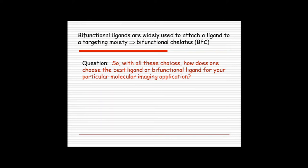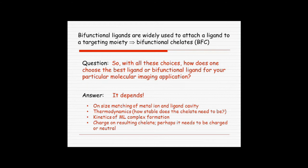So with all these available, how does one choose which one's the best one? If you have them all available to you, many of them are available commercially. So how do you choose the right ligand? And the answer is, well, it depends, of course. That's always the answer, right? And it depends upon things such as the size matching of the metal ion and the ligand cavity. In other words, I'll show you that that's an important consideration. Depends upon thermodynamics. How stable does the chelate really need to be for your particular application? How long is it going to remain in the animal or in the person? It depends upon kinetics of metal ligand formation. That is, usually you want to be able to form a complex quickly. And it may depend upon the charge of the resulting chelate. Maybe it needs to be charged or perhaps neutral. So there's a lot of options and a lot of answers.